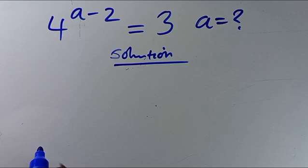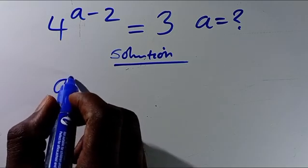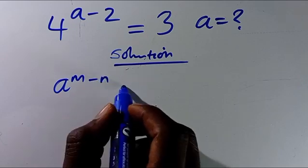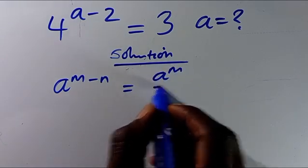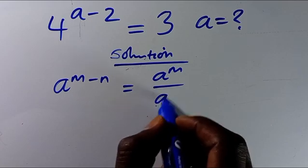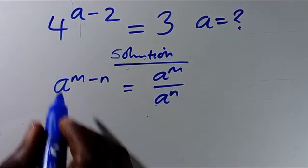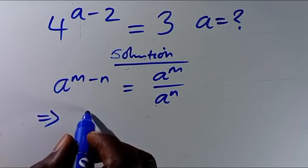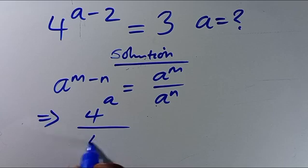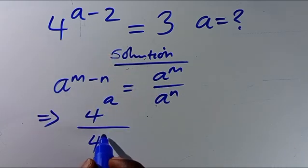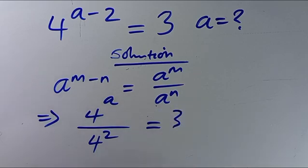Let's work through the resolution. Recall that a to the power of m minus n equals a to the power of m over a to the power of n. So from here, we are going to have this as 4 to the power of a over 4 to the power of 2, equals 3.